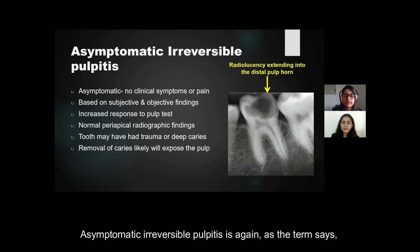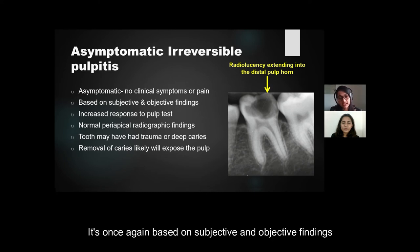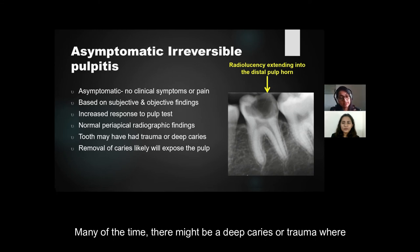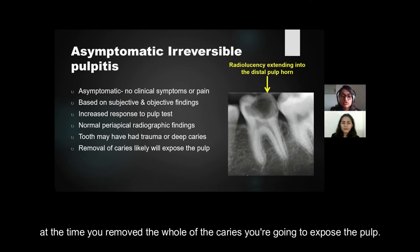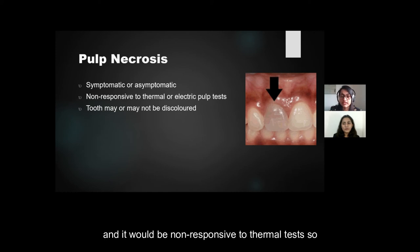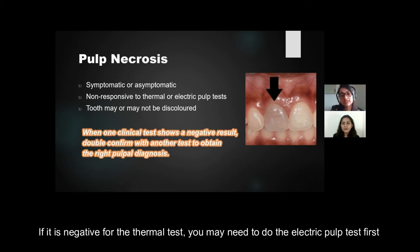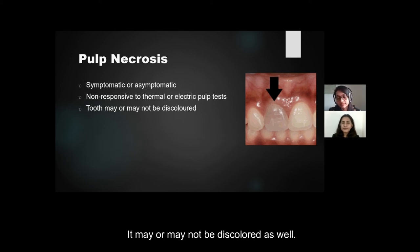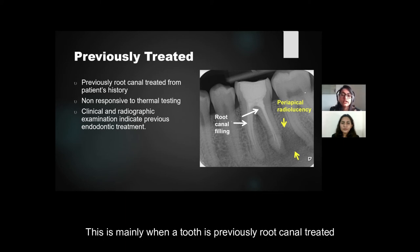Asymptomatic irreversible pulpitis means the patient is asymptomatic — no clinical symptoms or pain — and is diagnosed based on objective and subjective findings. Periapical radiographic findings may be within normal limits. This typically occurs with deep caries or trauma where, upon removing all the caries, you find you are going to expose the pulp. Pulp necrosis is when a tooth is non-vital — it could be symptomatic or asymptomatic — and it will be non-responsive to thermal tests. If negative to thermal testing, confirm with the electric pulp tester. The tooth may or may not be discolored.